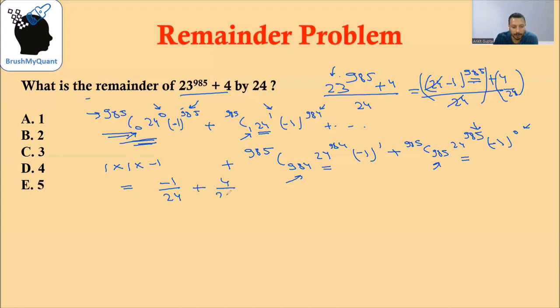Plus, what is the remainder when 4 is divided by 24? Our remainder will be minus 1 here and 4 here. If you add both of them, the final remainder will be 3. So the answer will be option C in this case.